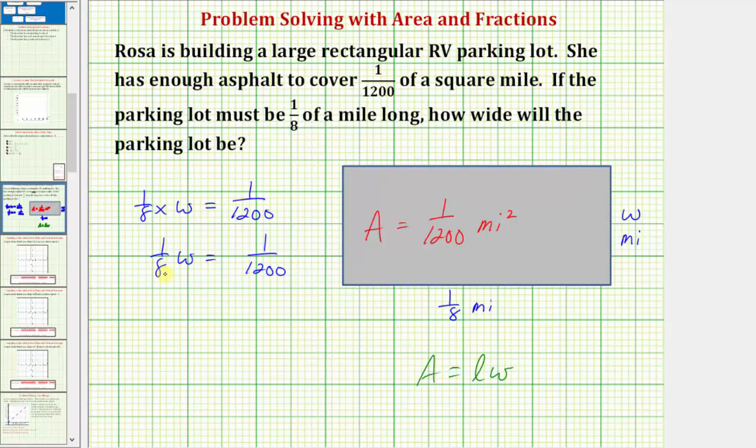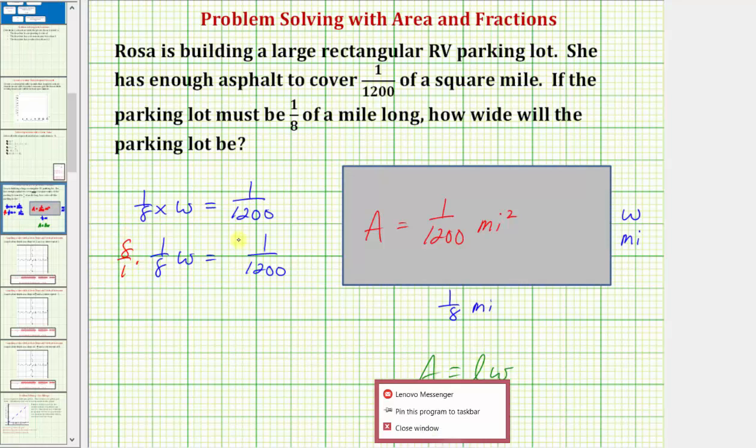So instead of dividing by 1/8, let's multiply both sides of the equation by the reciprocal of 1/8, which would be 8/1. So if we multiply the left side by 8/1, we must do the same to the right.